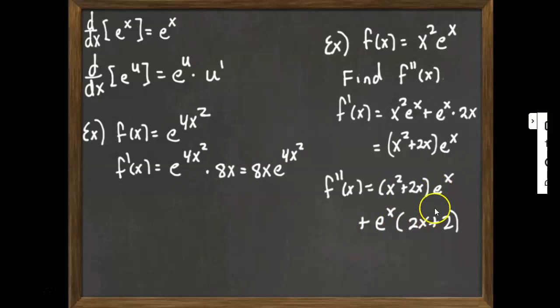So e to the x can get pulled out of both of those quantities. And we'll have x squared plus 2x plus 2x plus 2. So we would get x squared plus 4x plus 2, all that times e to the x.